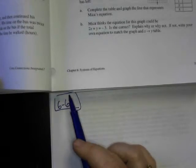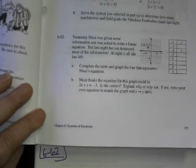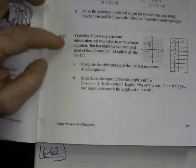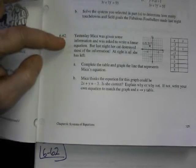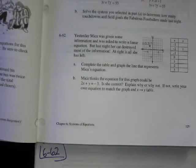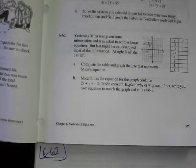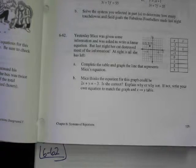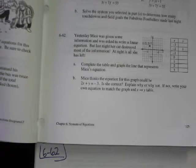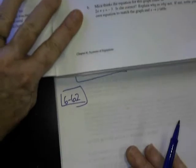Okay, this is number 6-62, and it says yesterday Micah was given some information and was asked to write a linear equation, but last night her cat destroyed most of the information. At right is all she has left. Complete the table and graph the line that represents Mika's equation.